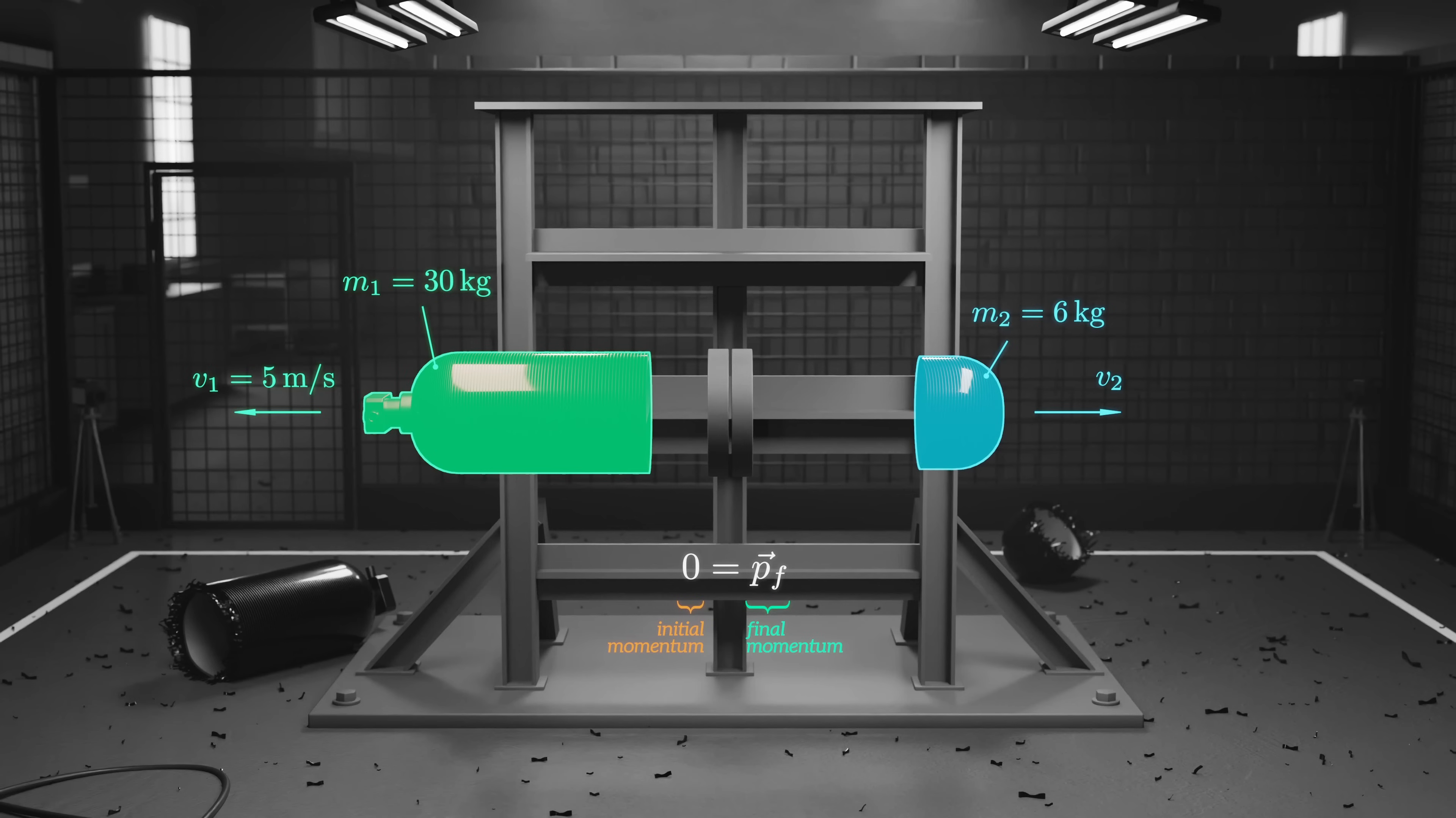The final momentum is the sum of the momentum vectors for both fragments. They sum to 0, so they must be equal in magnitude but opposite in direction. We can express this in terms of the mass and velocity of both fragments, and rearrange to solve for the velocity of fragment 2. It was travelling in the opposite direction to the heavier fragment, at a speed of 25 meters per second.